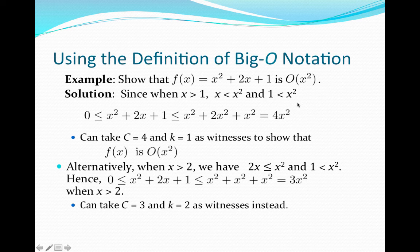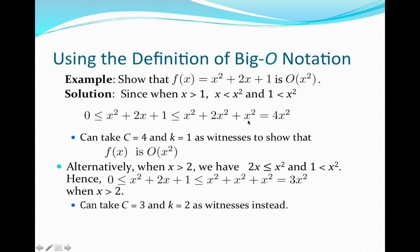Now notice, when x is bigger than 1, our function f of x equal to x squared plus 2x plus 1 is also going to be positive. Using the inequalities we found above, x squared is obviously less than or equal to itself; 2x will be less than or equal to 2x squared by multiplying both sides by 2; and 1 is strictly less than x squared. So summing the coefficients on each of these x squareds, we get that f of x is less than or equal to 4x squared for every x greater than 1. This means that c equal to 4 and k equal to 1 are witnesses that show that f of x is big O of x squared.